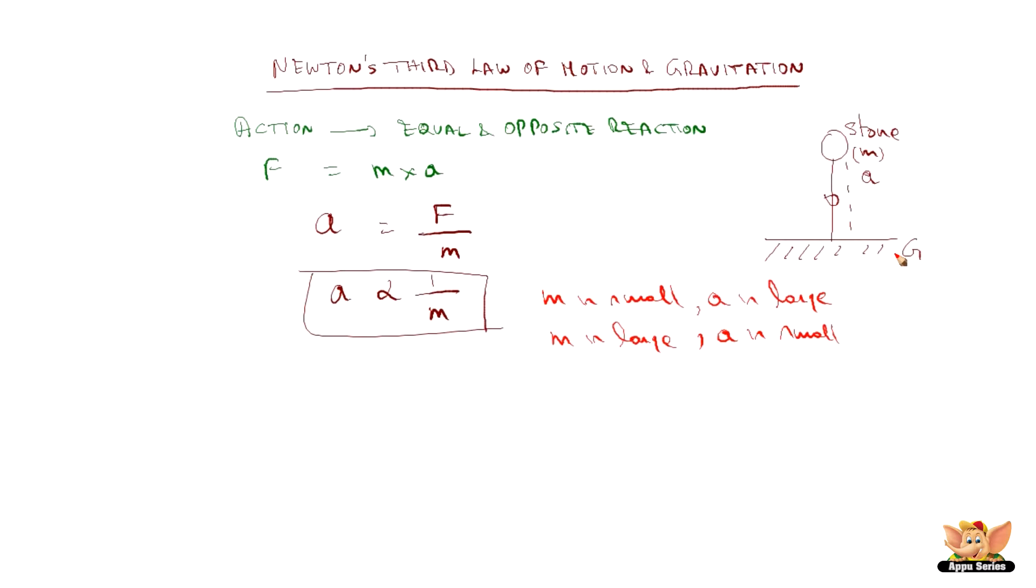Now in this case, if we take m as that of the stone, let's say the earth's mass is capital M. In this case, M is much much greater than small m. So if you see the acceleration by earth and acceleration by the stone, acceleration of earth is proportional to 1 by capital M, and acceleration of stone is proportional to 1 by small m. This is for earth, this is for stone.